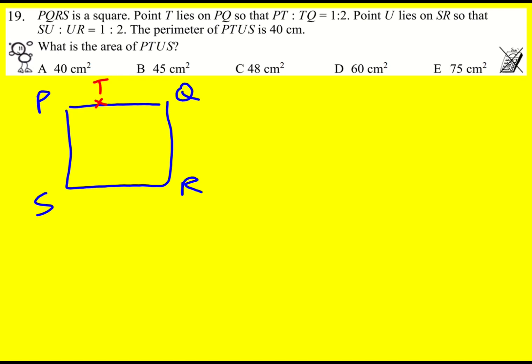So U lies on SR so that SU to UR is also 1 to 2. It's going to be, because it's a square, exactly in line. I could draw a dotted line going down, and the perimeter of PTUS...